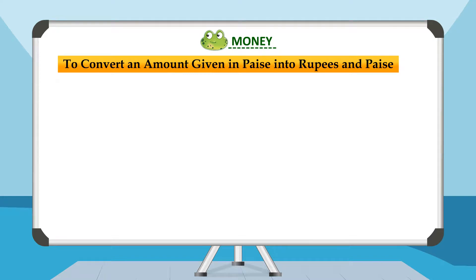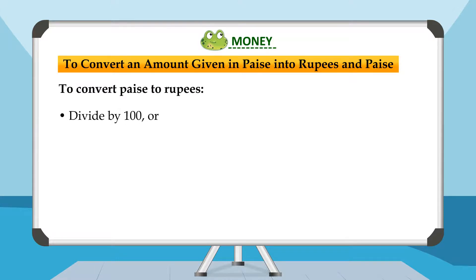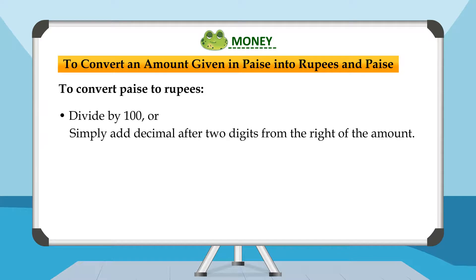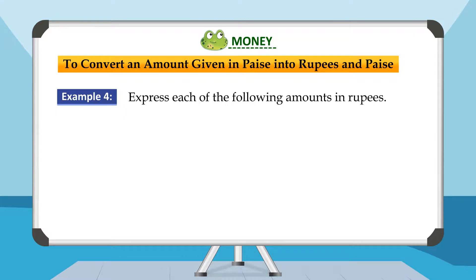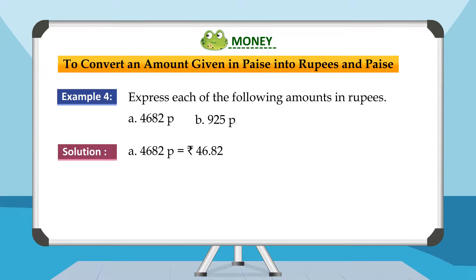To convert an amount given in paise into rupees and paise: divide by 100 or simply add a decimal after two digits from the right of the amount. Remove 'p' and add the rupee symbol before the amount. Example 4: Express each of the following amounts in rupees. A. 4682 paise equals rupees 46 and 82 paise. B. 925 paise equals 925 divided by 100, which is equal to rupees 9 and 25 paise.